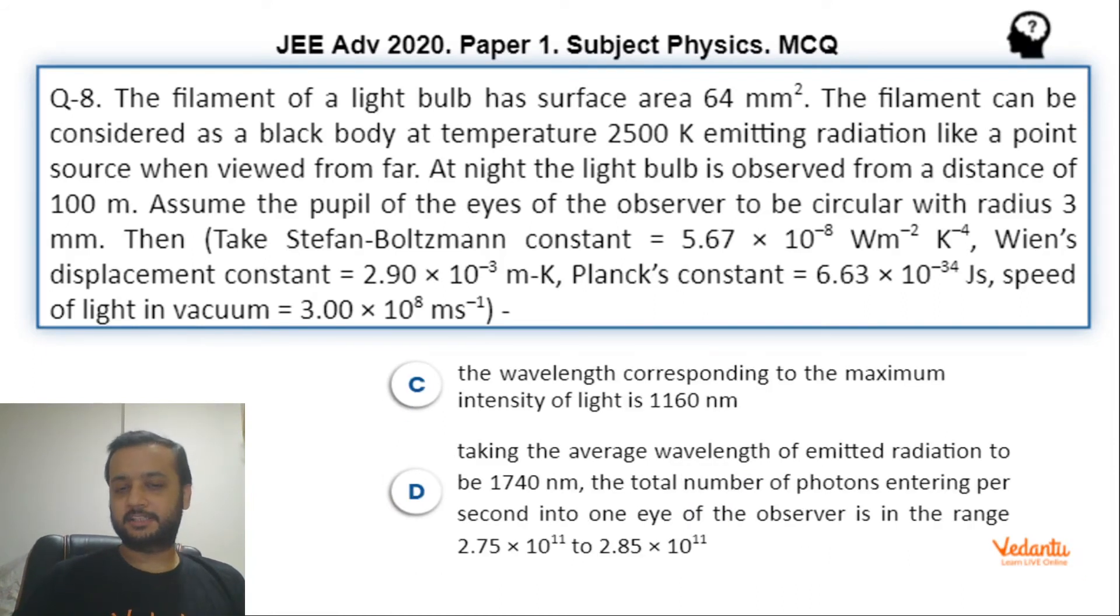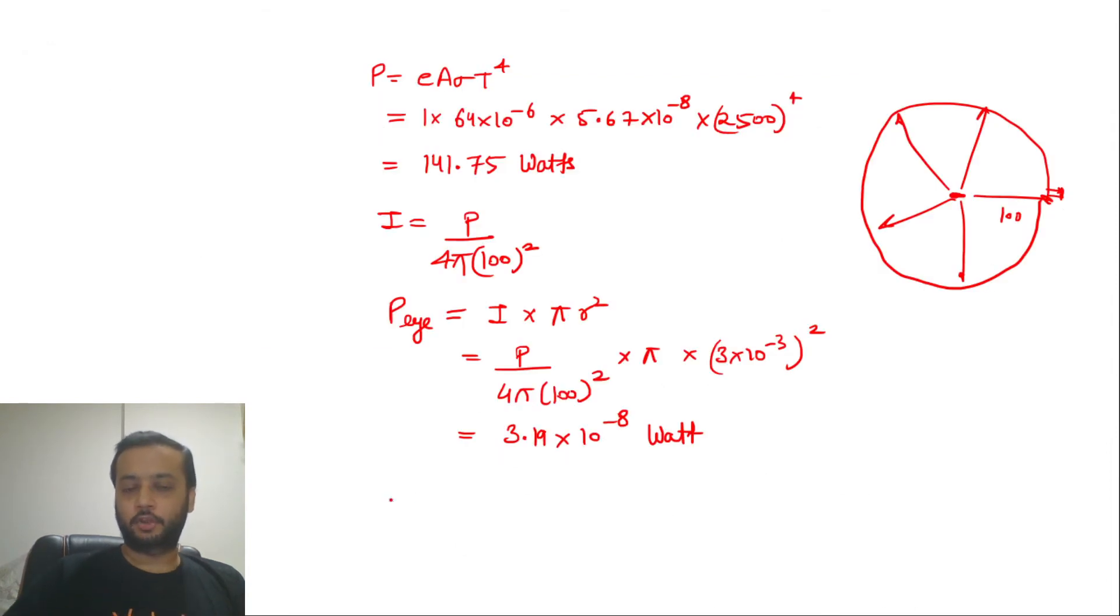Now let's check for option C. Wavelength corresponding to maximum intensity of the light, straightforward Wien's displacement law. The value is 2.90, the constant 2.90 × 10⁻³ meter. Then lambda_m × temperature equals the displacement constant.